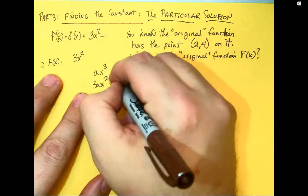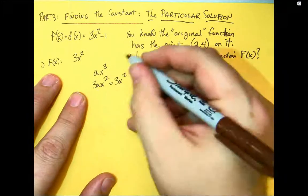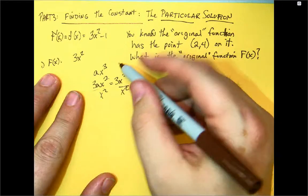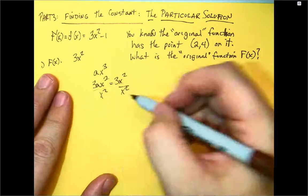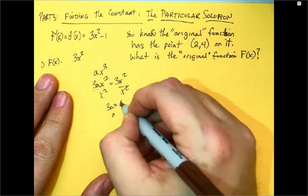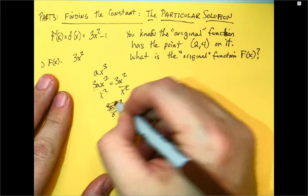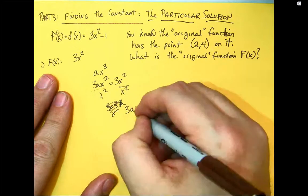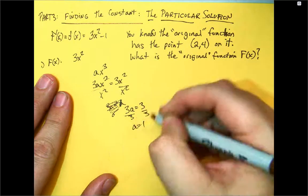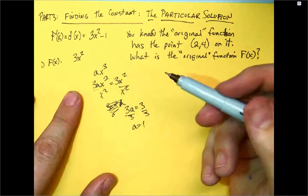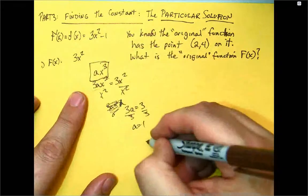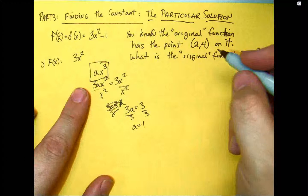the derivative is going to be 3ax squared. Now, that should be equal to 3x squared. Divide by x squared, divide by x squared, those go away. 3a should be equal to 3. Divide by 3, divide by 3, a is equal to 1.